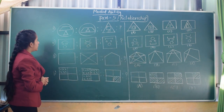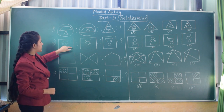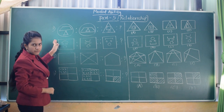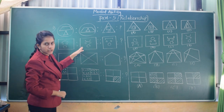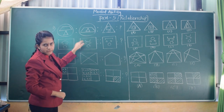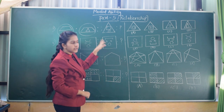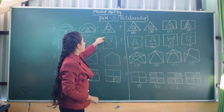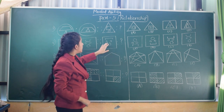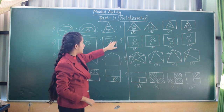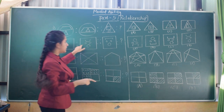In the second question, there are three circles given and one U-shaped figure which is pointing in the downward direction. In the relationship figure of that, the U-shape is in the upward direction. Now in another figure, there is a half-box type figure given, and it is pointing in the downward direction. In our answer figure, that should be in the upward direction based on this relation.